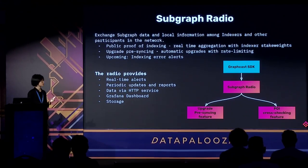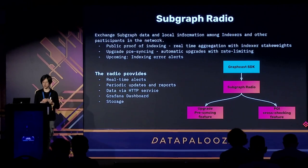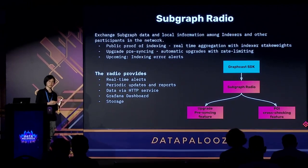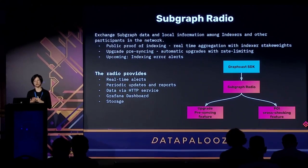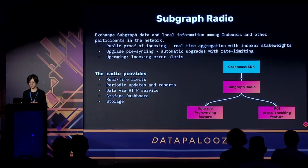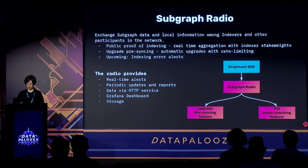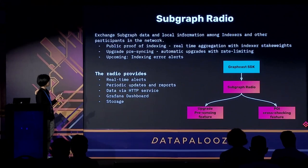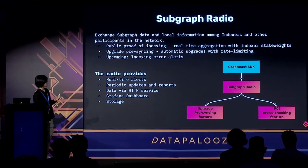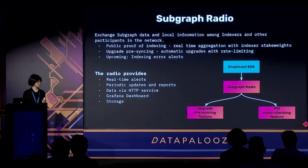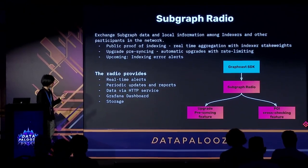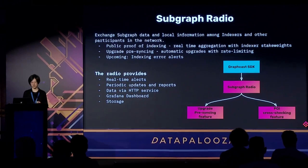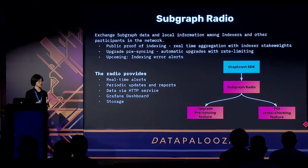The human operator can then choose actions like resyncing the subgraph, playing a bisection game to find the source of divergence, immediately submitting a previously correct POI to still collect some rewards, or choosing to forfeit the indexing rewards to avoid slashing. The radio also provides utilities including P2P and HTTP services and a Grafana dashboard for exposing data quickly, along with some storage options.